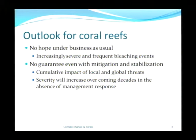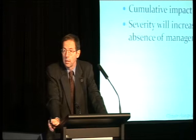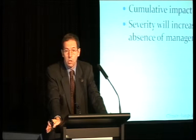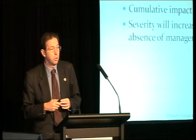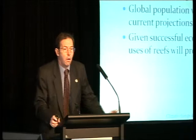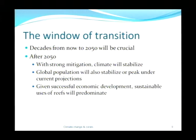But critically, there's no guarantee even with mitigation and stabilisation. The cumulative impact of local and global threats is very likely to damage or degrade a large proportion of the world's coral reefs, including potentially those in developed countries such as Australia. The severity of both these threats is going to increase over coming decades in the absence of management response. The only really original idea in this talk is the idea of a window of transition: if we can get through to 2050 without losing major assets, the situation is going to become steadily more favourable from that point onwards.